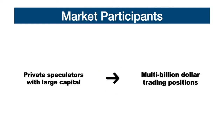Large private speculators who open multi-billion dollar positions can have a concrete impact on the price movement of currency pairs. This also applies to retail traders with large amounts of capital, such as the famous George Soros, who invests in currency pairs with multi-billion dollar positions. By entering the market with positions of this size, you can certainly influence the direction of the price.